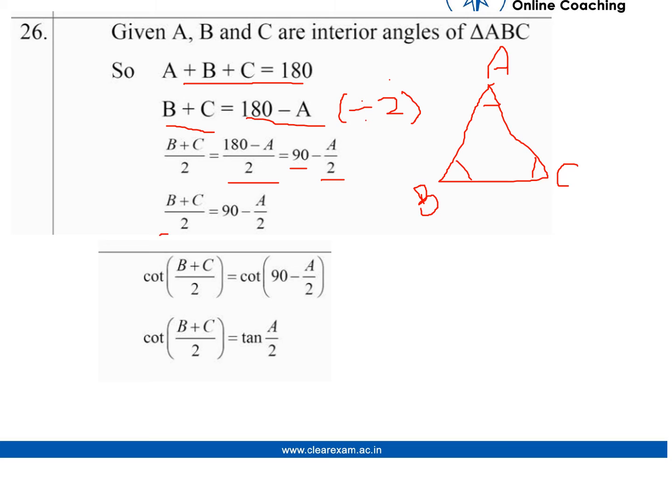So, this is what we have now, and now we can apply cot function on both the sides. So, we get cot of B plus C by 2 equal to cot of 90 minus A by 2, and we know that cot of 90 minus theta is tan theta. So, we can write cot of B plus C by 2 equal to tan A by 2.